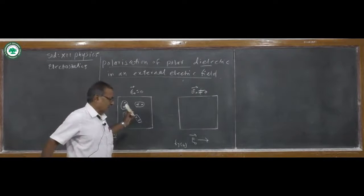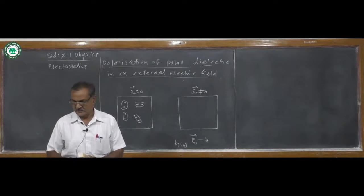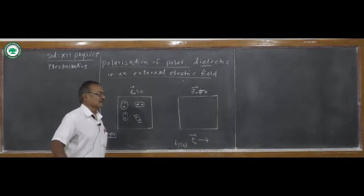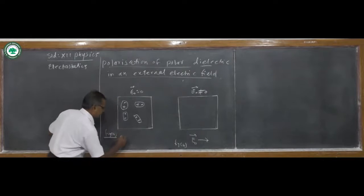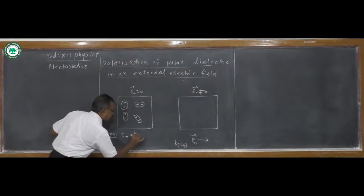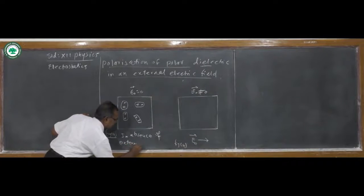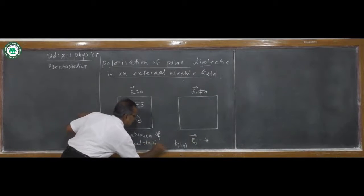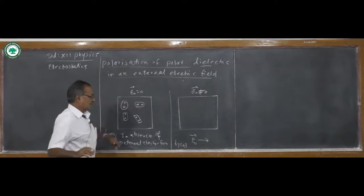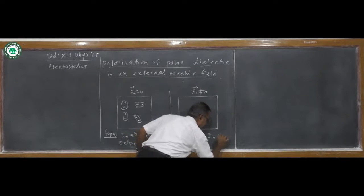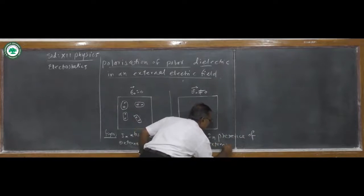They are randomly oriented and hence the net dipole moment, or the total dipole moment, is zero. So here, in figure A, this represents the absence of an external electric field.